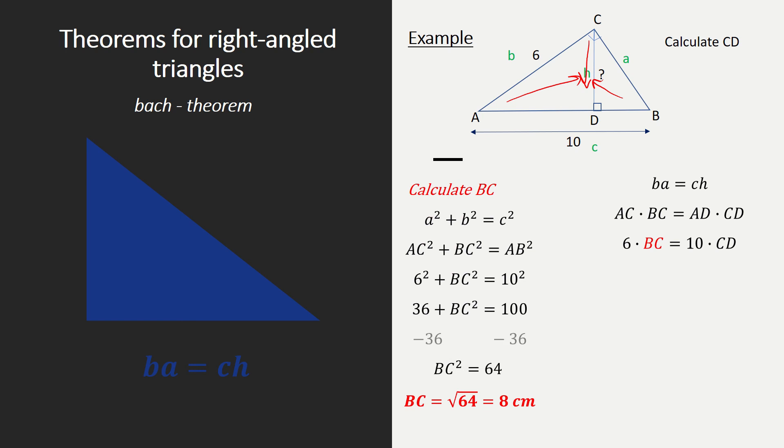I'm going to subtract 36 on both sides using the balance method. And then I get BC squared equals 64. So my little spoiler alert, BC is the square root of 64 equals 8 centimeters.